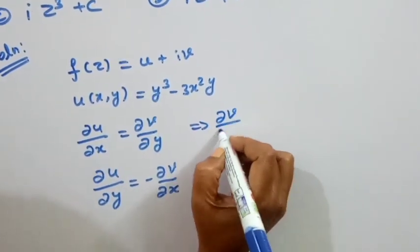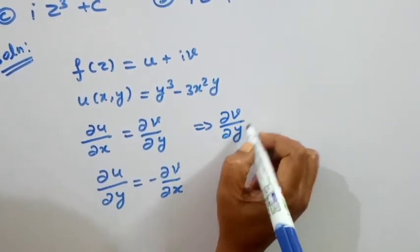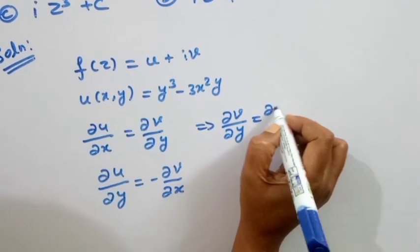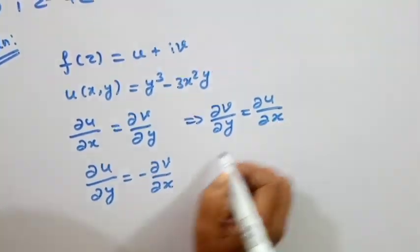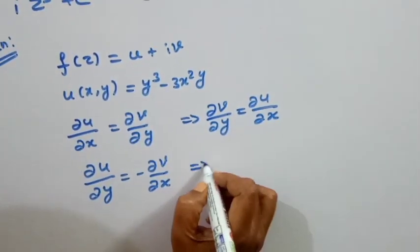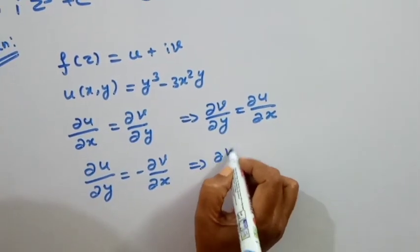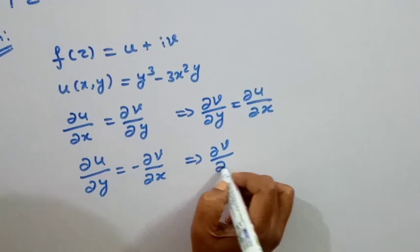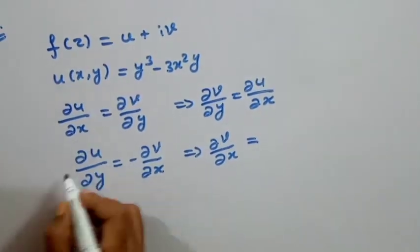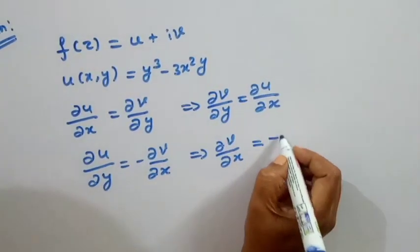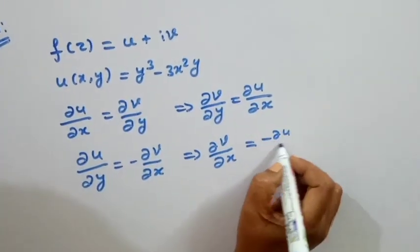From the CR equations: dou v by dou y is equal to dou u by dou x, and dou v by dou x is equal to minus dou u by dou y.